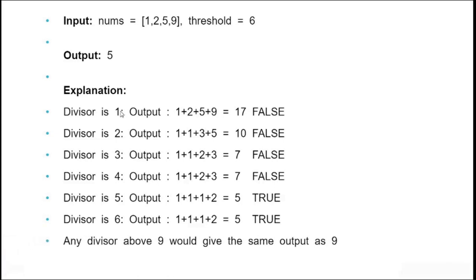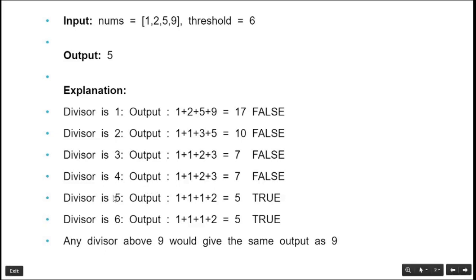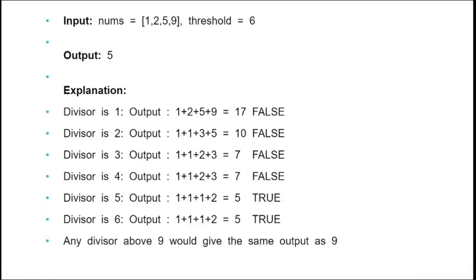Observe that as the divisors increase, the output is decreasing. What we want is the first divisor where we encounter a true condition. Once we encounter true, increasing the divisor further will also yield true. There is a monotonic order: outputs are in descending order as divisors increase. We can do a binary search to find the first divisor at which the condition is true — that would be our answer.